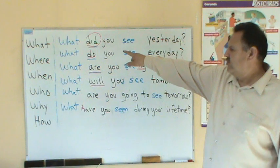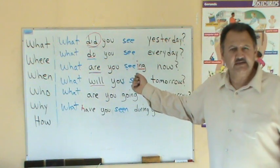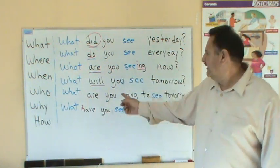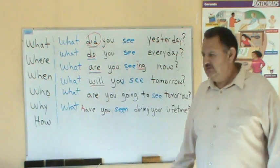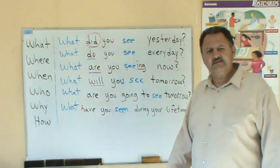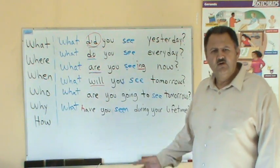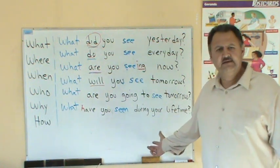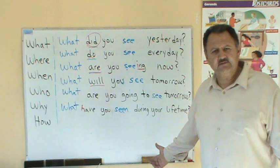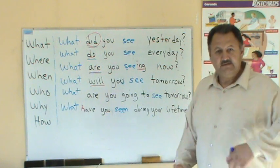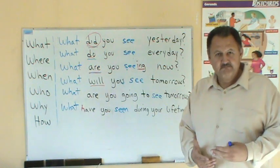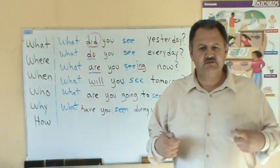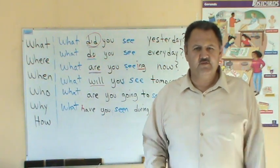One more time: What did you see? — ¿Qué viste? What do you see? — ¿Qué ves? What are you seeing? — ¿Qué estás viendo? What will you see? — ¿Qué verás? What are you going to see? — ¿Qué vas a ver? What have you seen? — ¿Qué has visto? ¿Sí ven? And like that — try it with different verbs.